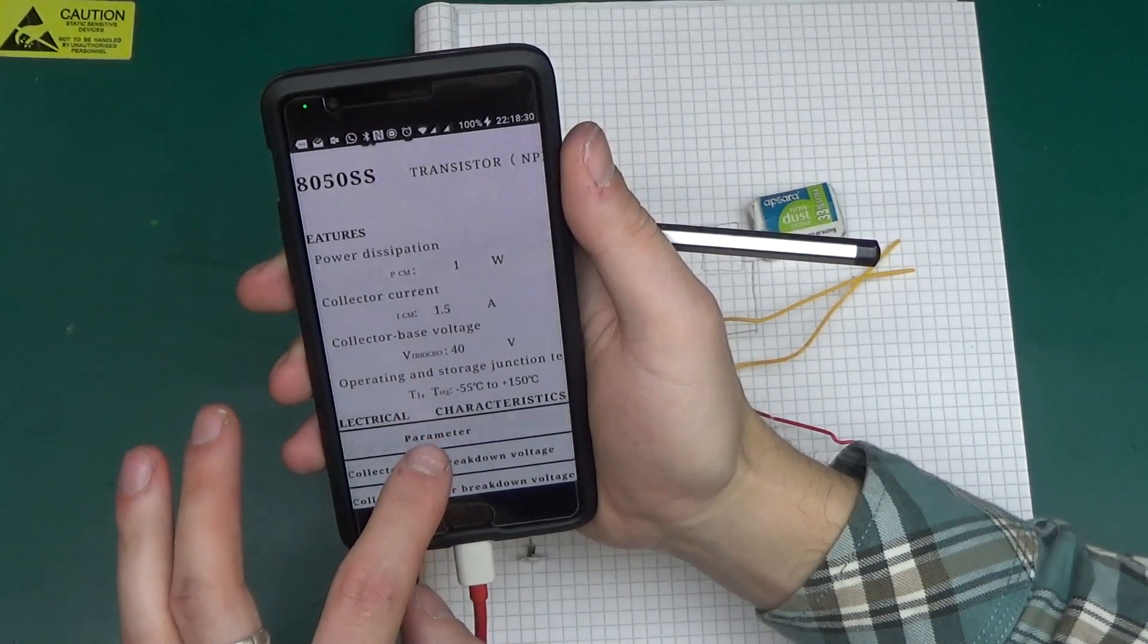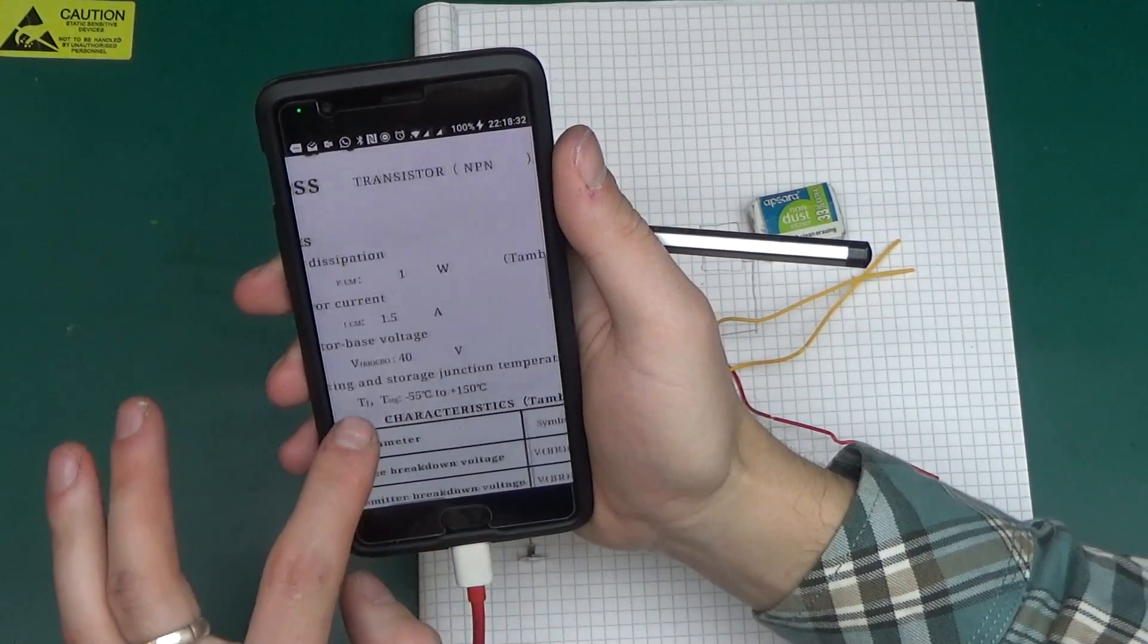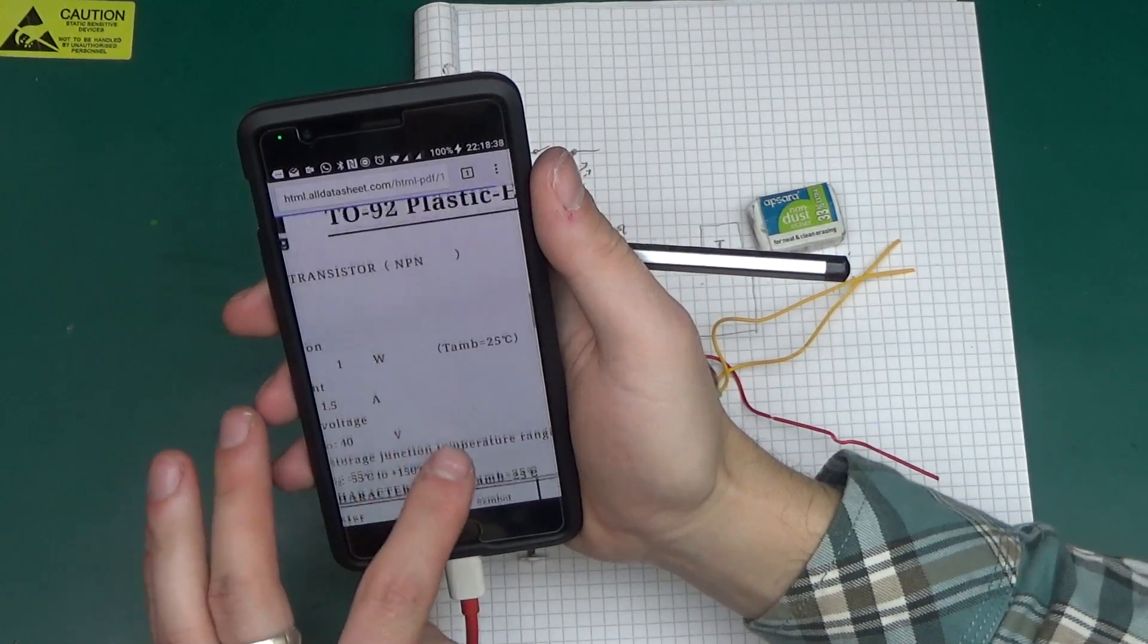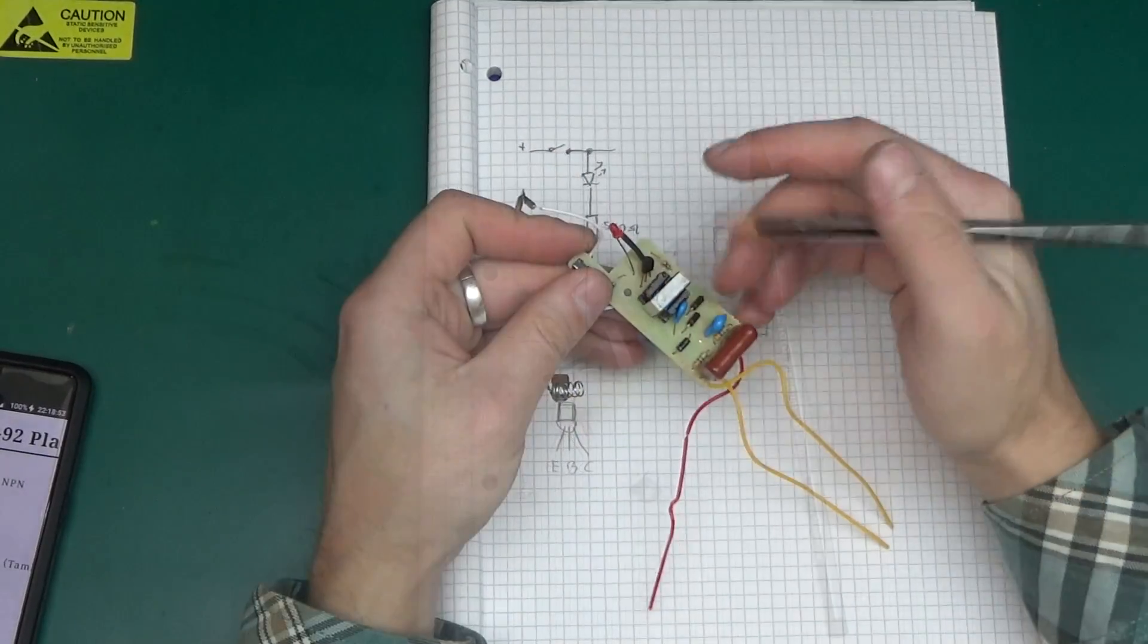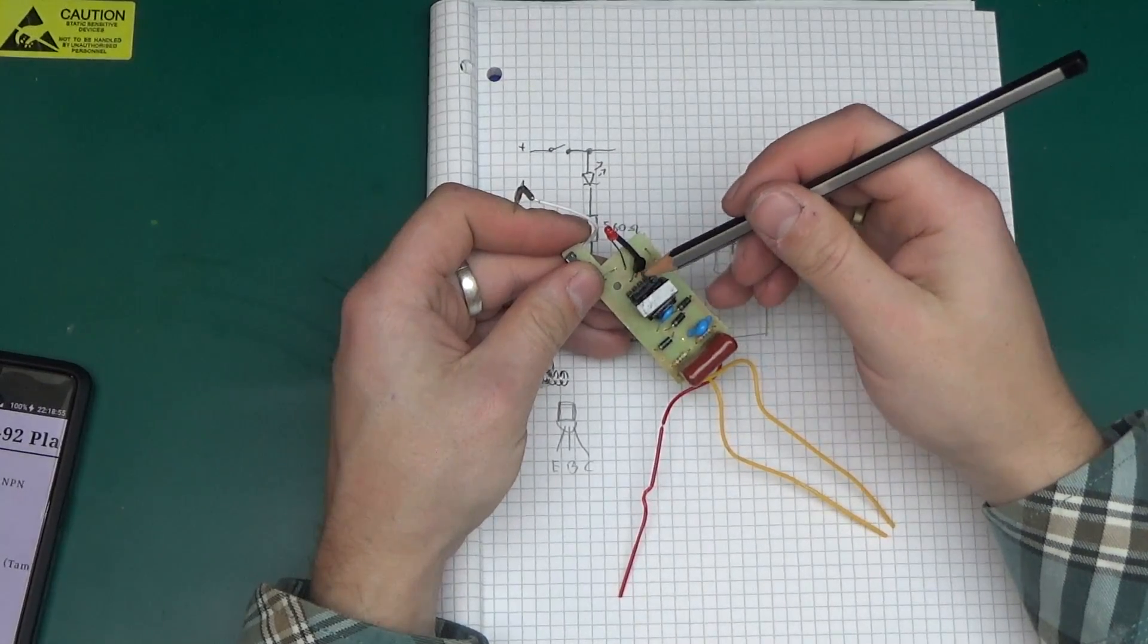TO-92 plastic encapsulate transistor. Collector current one and a half amps and 40 volts collector-base voltage. One and a half amp NPN transistor. Doesn't look like one and a half amps. The pinout of this is emitter, base, collector.